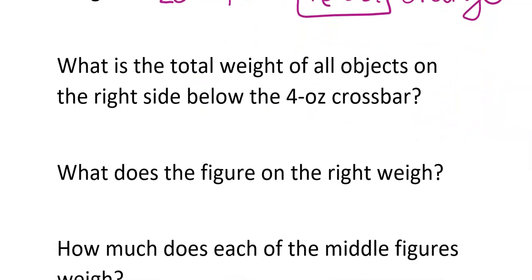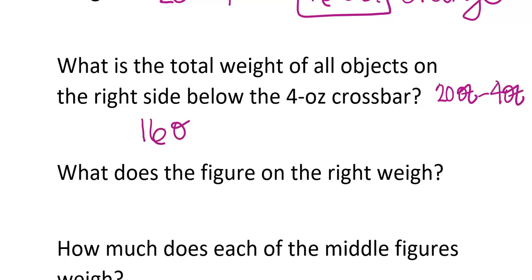What's the total weight of all the objects on the right below the 4-ounce crossbar? You're going to have 20 ounces on the right again, and the 4-ounce crossbar weighs 4, so we get 16 ounces here as well.